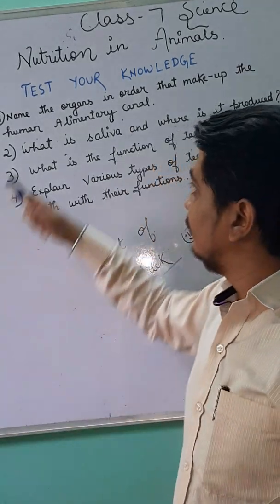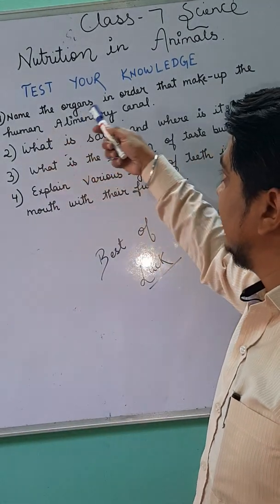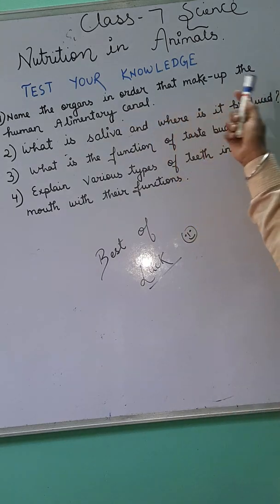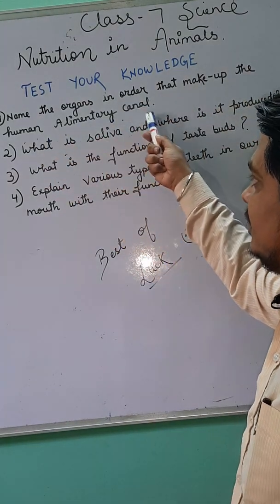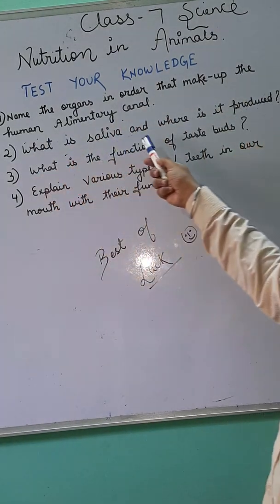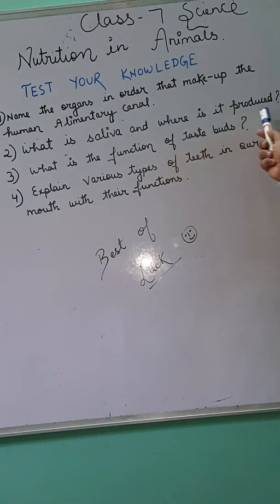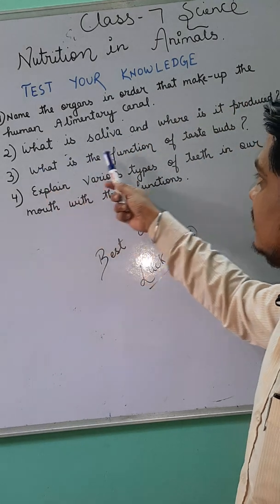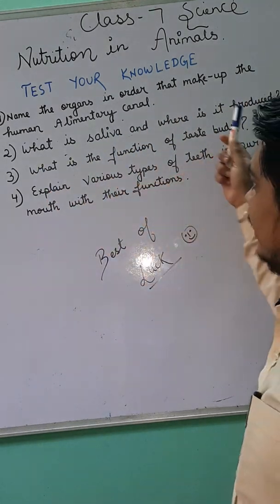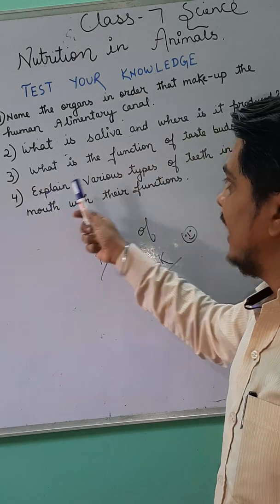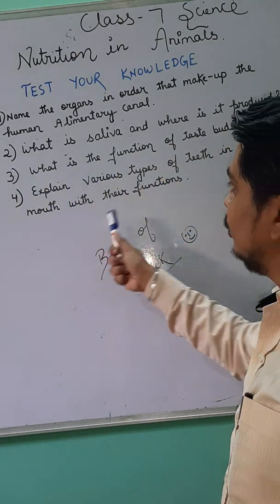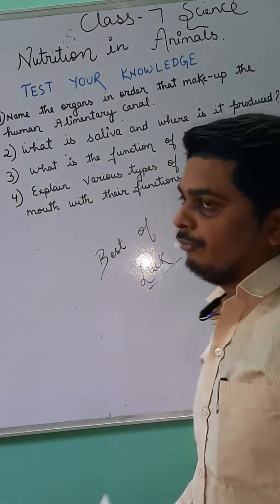The first question is: name the organs in order that make up the human alimentary canal. Second question: what is saliva and where is it produced? What is the function of taste buds? Fourth: explain various kinds of teeth in your mouth with their functions.